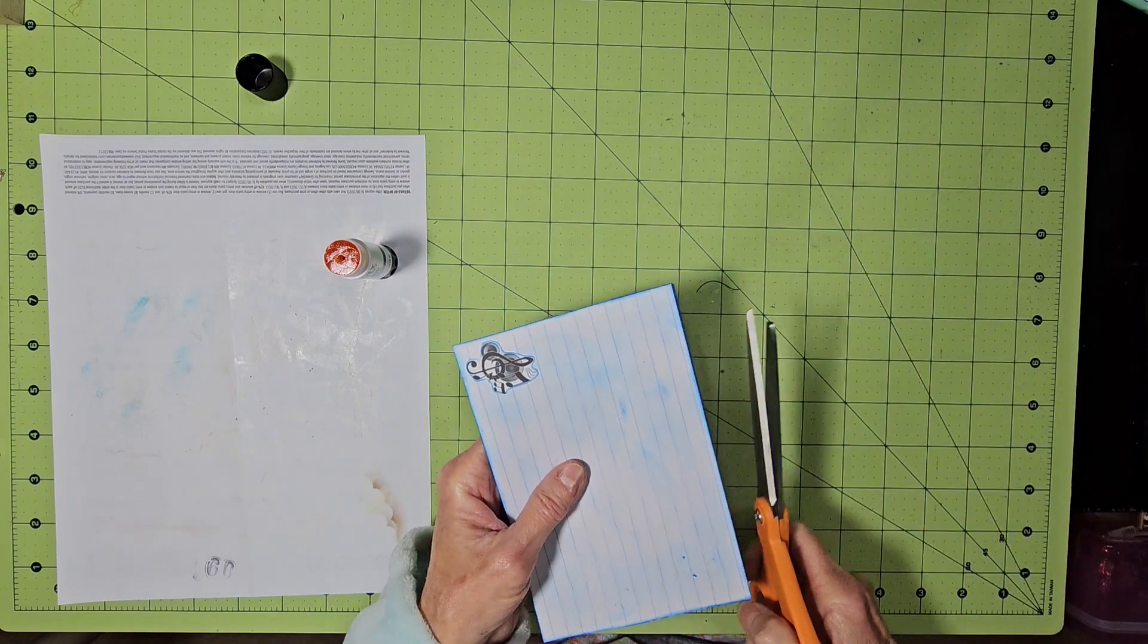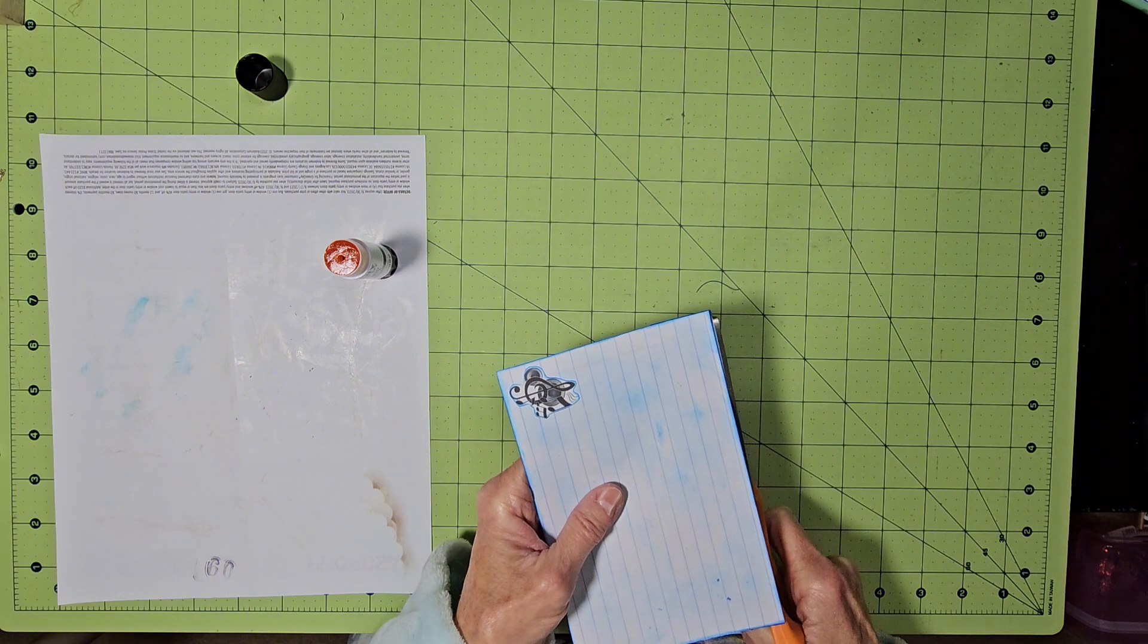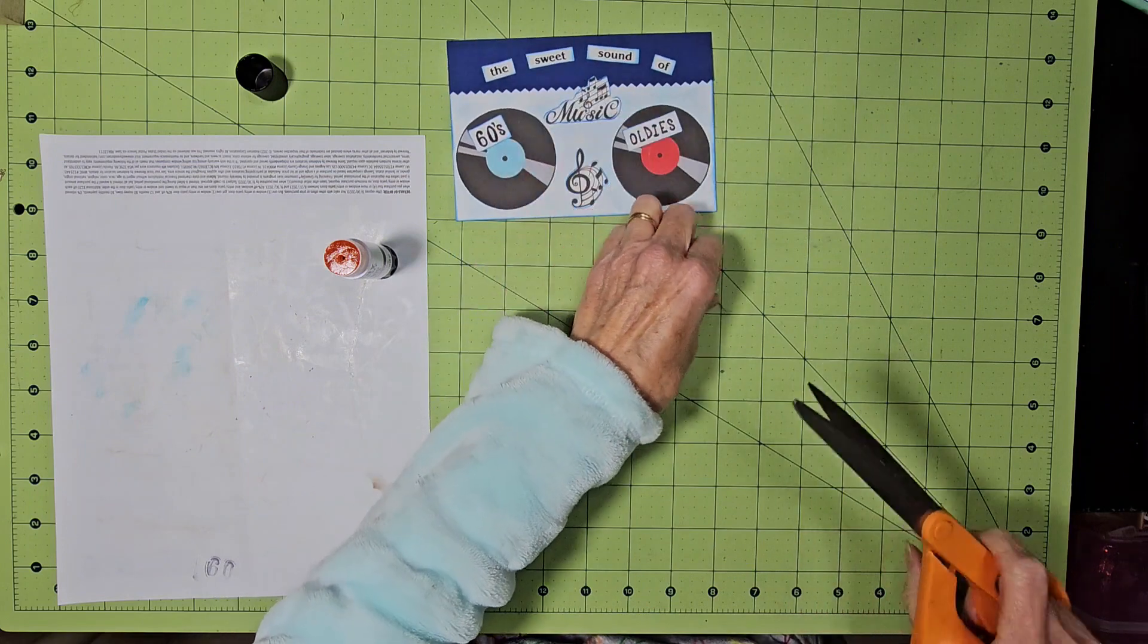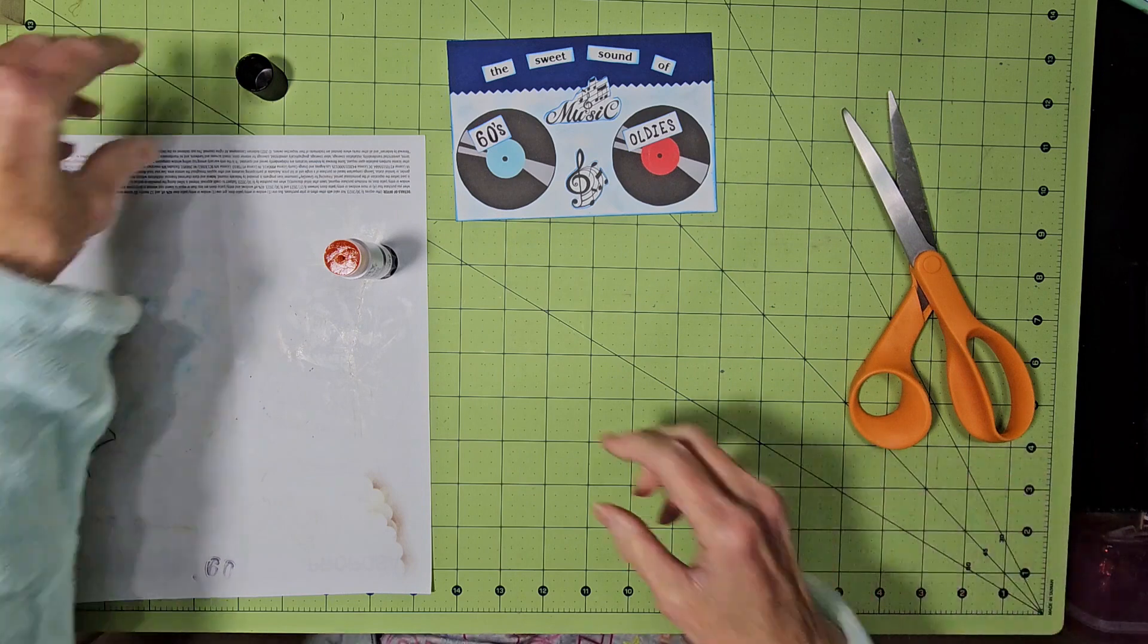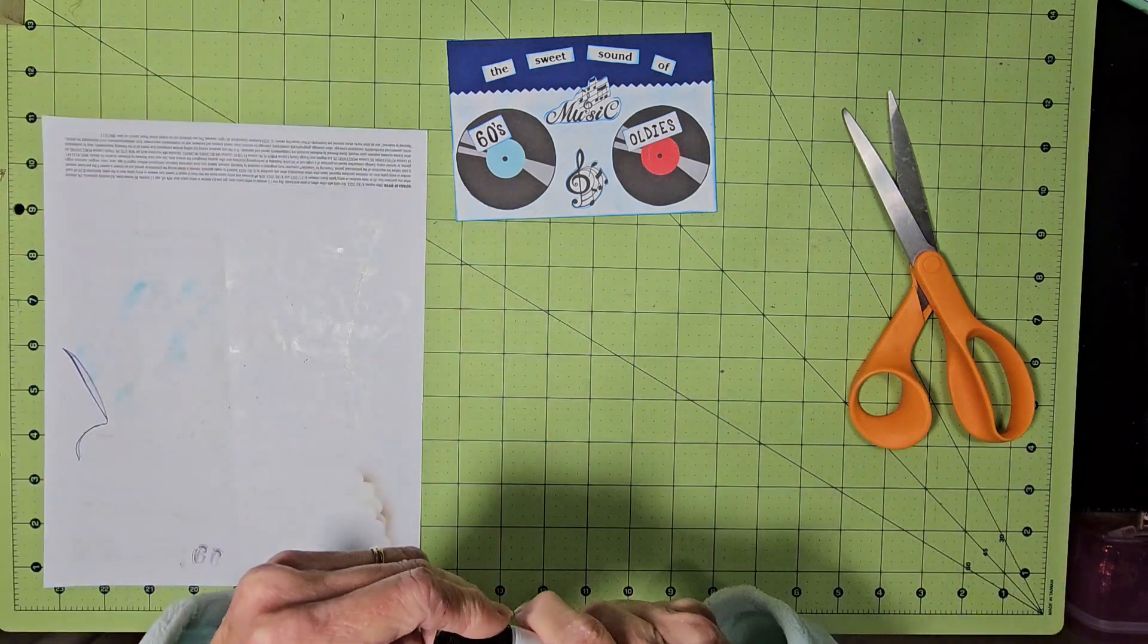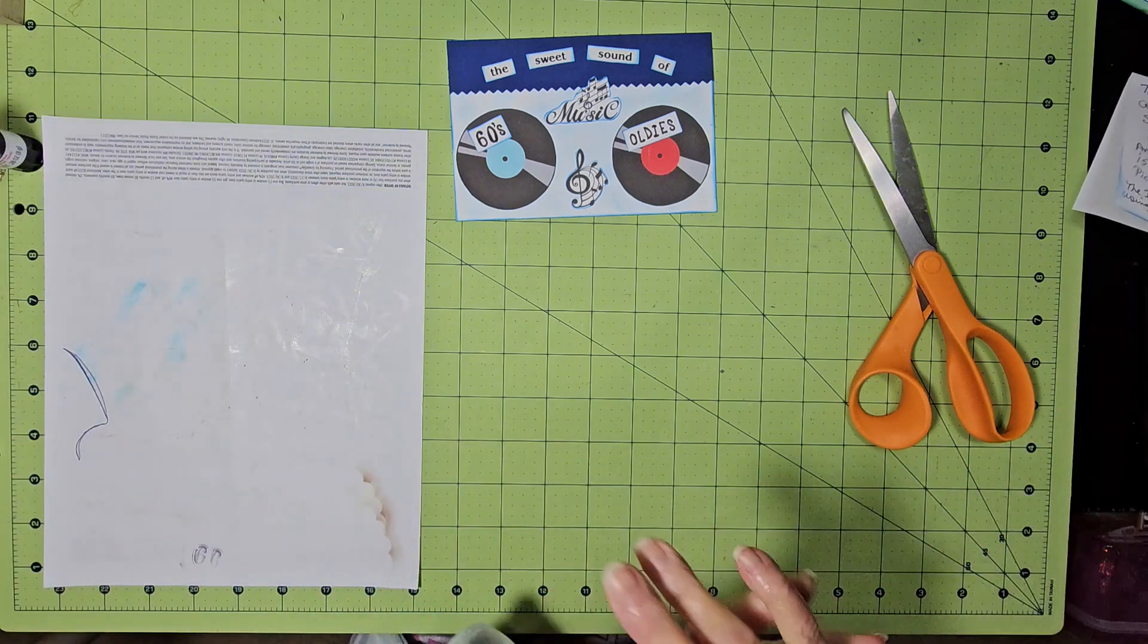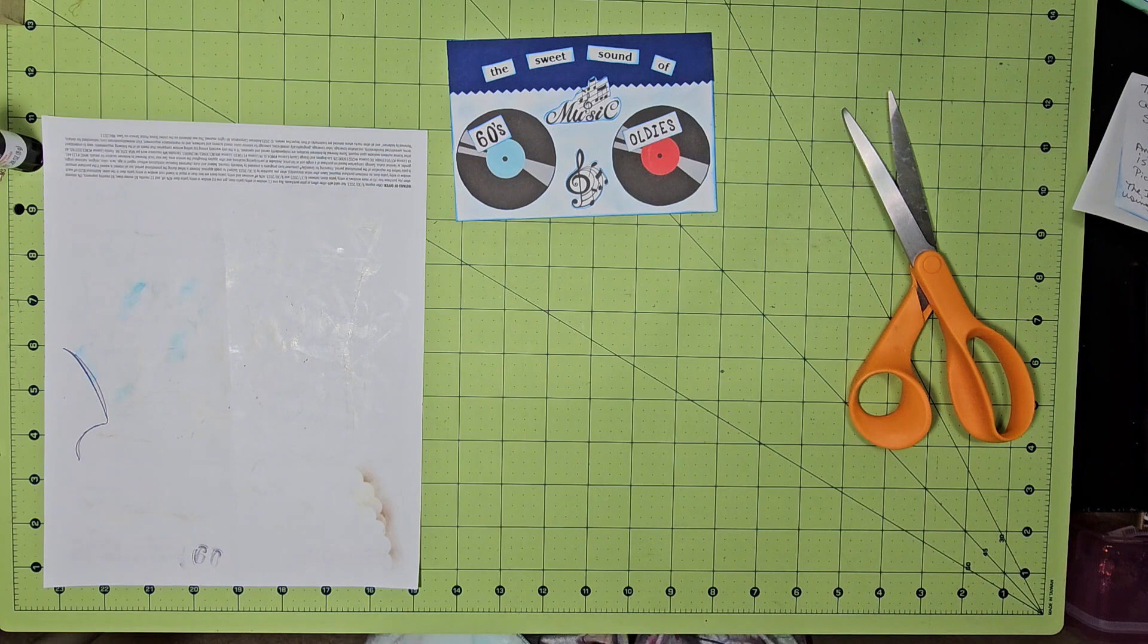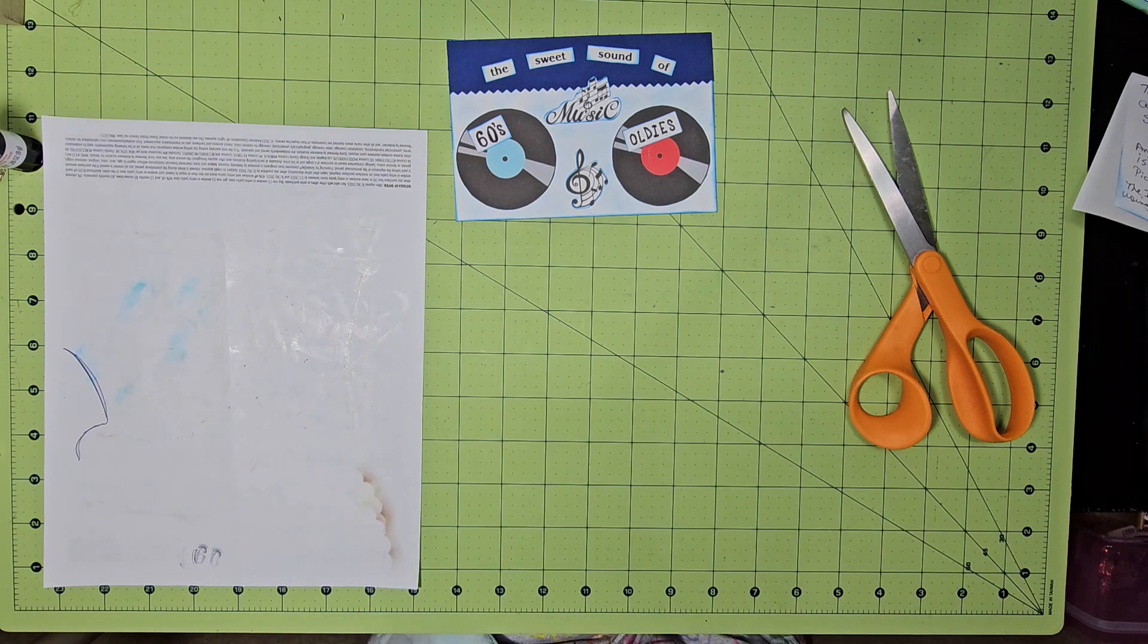I just have to trim this off a little tiny bit. I must have got it on there cockeyed. So there you go. There's my first video to the Altered Index 2024 Challenge.